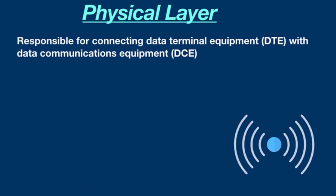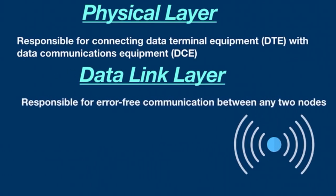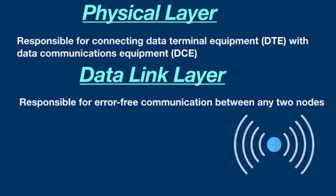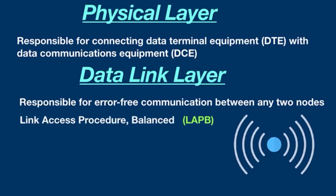X.25 encompasses the first three layers of the OSI model. The physical layer is concerned with signaling and is responsible for connecting data terminal equipment such as computers and terminals at the customer premises with data communication equipment such as X.25 packet switches at the X.25 carrier facilities. The data link layer is responsible for error-free communication between any two nodes, with errors checked and corrected for each device across the network. This feature makes X.25 robust and suitable for noisy, error-prone links.